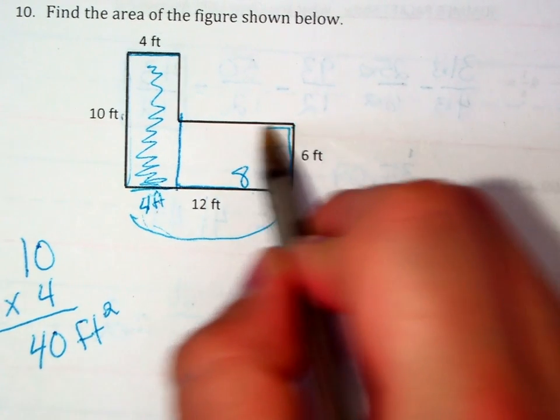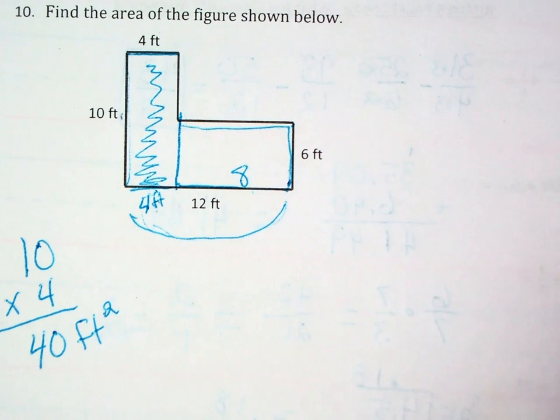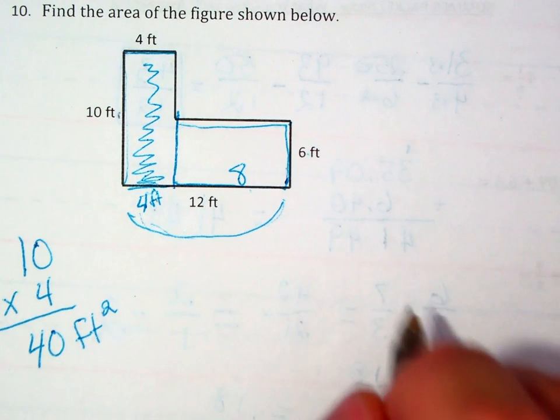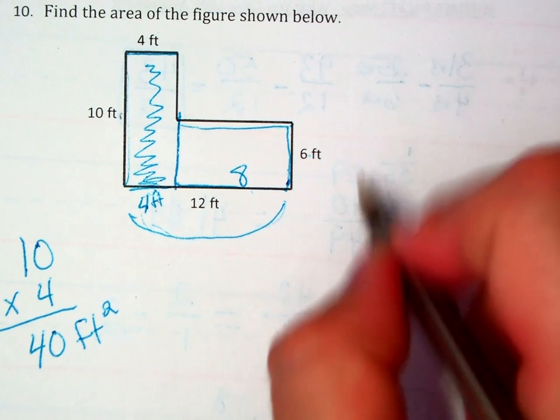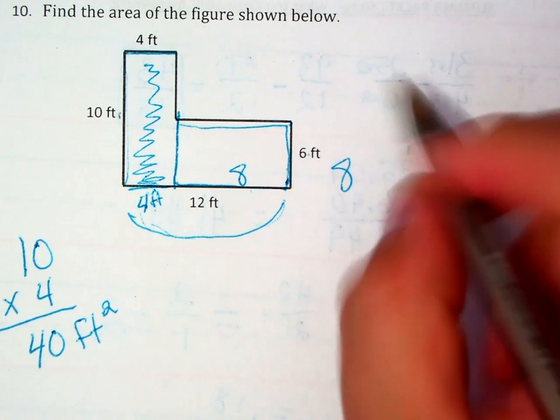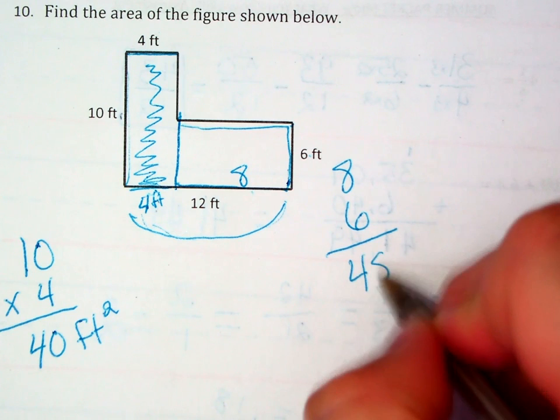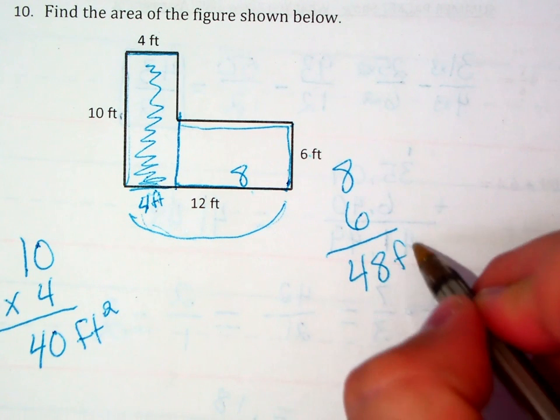And that will tell us that this small rectangle is now 8 feet long. It still remains 6 feet high, so we can say 8 times 6 is 48 feet squared.